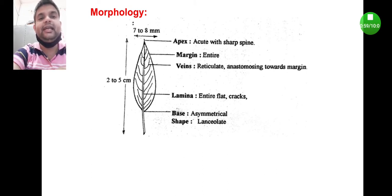The base is asymmetrical. You can find here the lamina part at the left-hand side and right-hand side attached to the midrib at different junctions. That's why the base is asymmetrical.